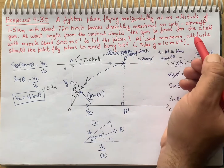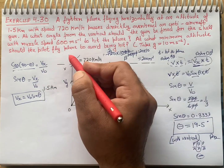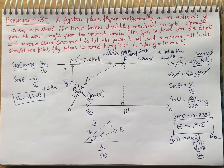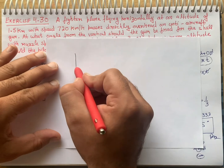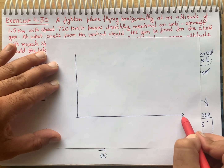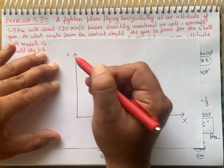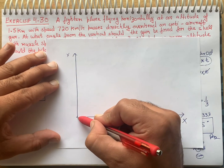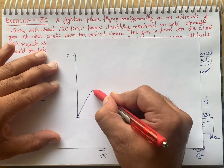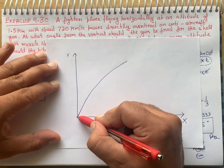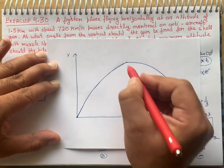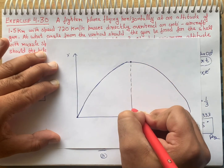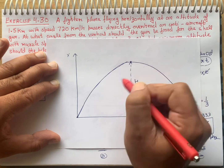Now let's see the second part: at what minimum altitude or height should the pilot fly the plane to avoid being hit? Let's understand this question better. We draw x-axis and y-axis again — this is my x-axis and this is my y-axis. The anti-aircraft gun fires a shell as a projectile.